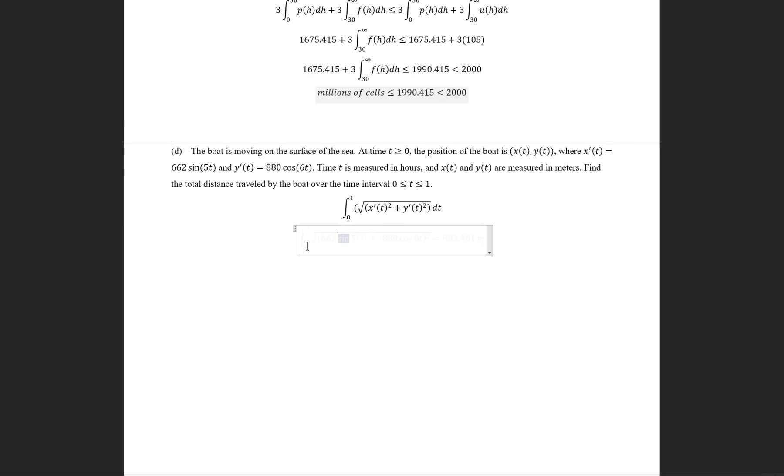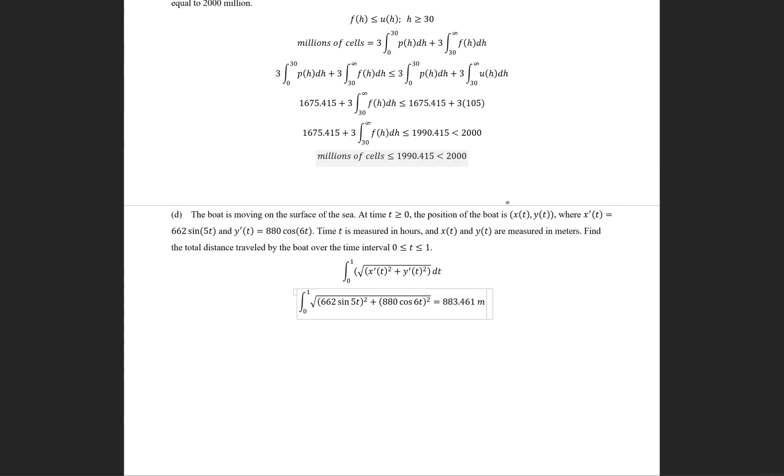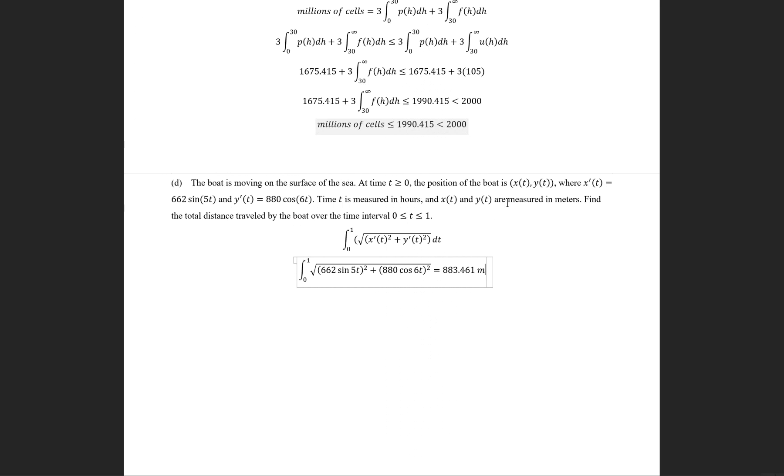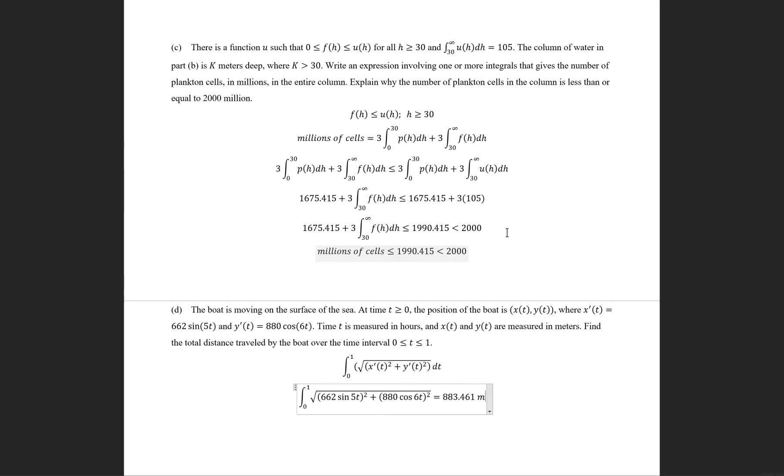Just like all the other ones, it already gives you x prime t and y prime t, which means, thankfully, that you don't have to derive it for yourself. Just plug in the values into the f and integral function. And you get your travel distance 883.461 meters traveled in one hour.